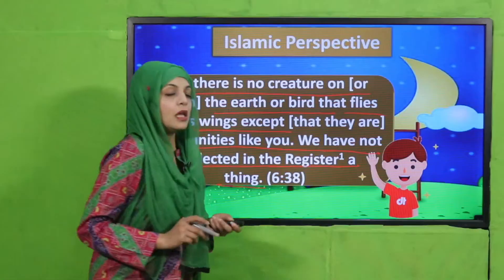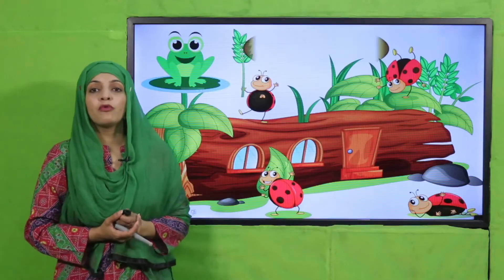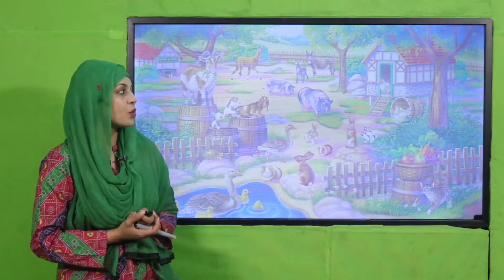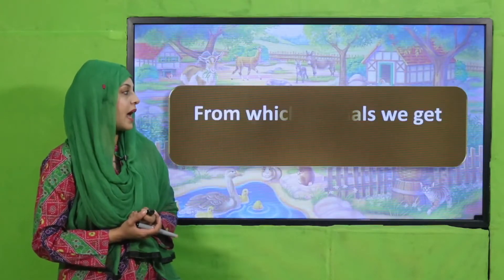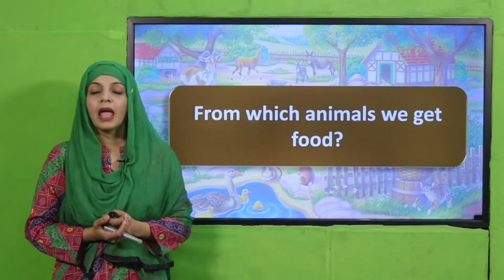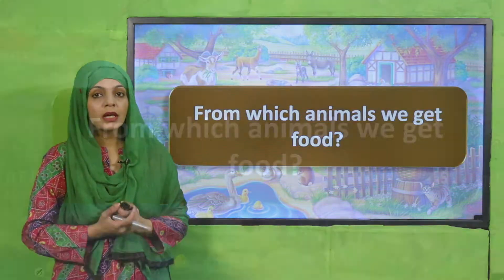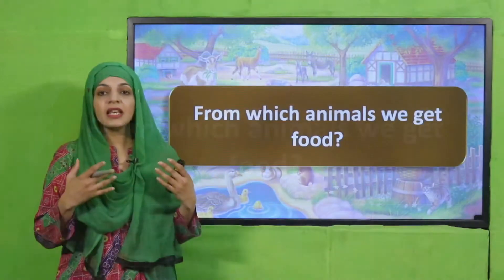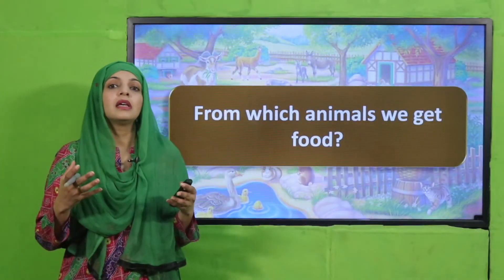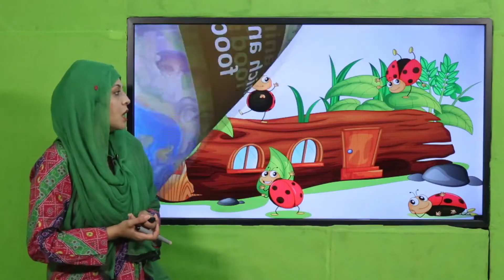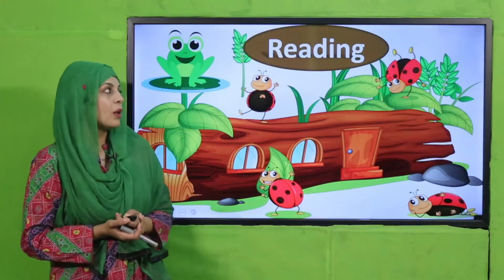Now let's quickly move forward towards the pre-reading question. Quickly tell me: from which animals do we get food? Hen, cow, goat, and buffalo — all these animals give us and provide us with food.